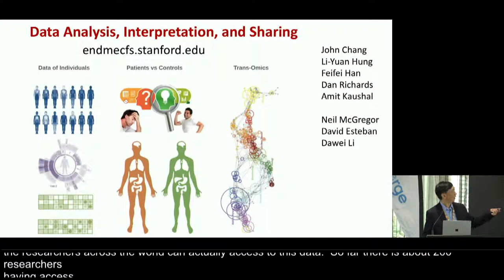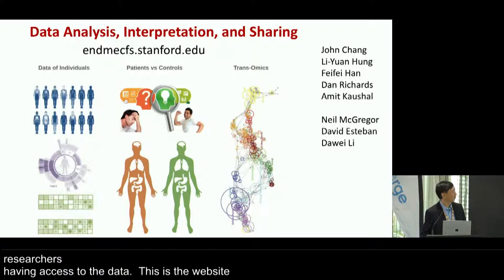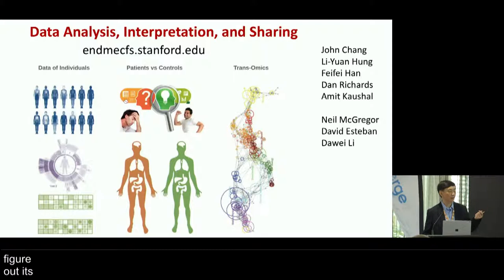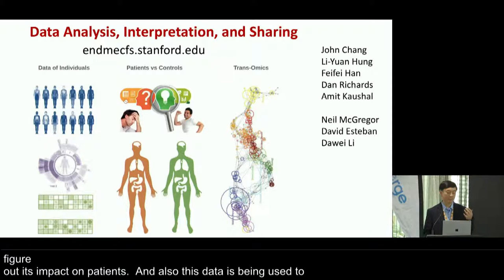This is a website, and I just listed a few researchers here. David Espin in Los Angeles is looking at microbiomes and helping figure out the impact on neuroprotectant metabolites in the patient. And David Espin in Vermont is using this data to look at retroviruses in the genome and see whether endogenous retroviruses potentially play a role in the disease.